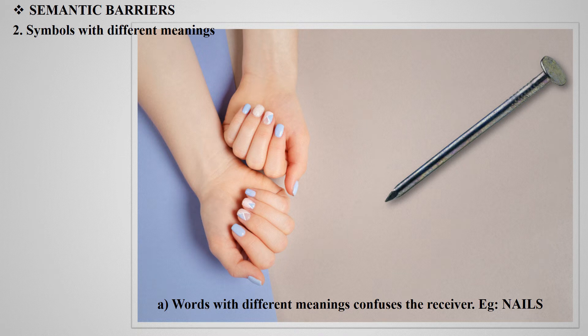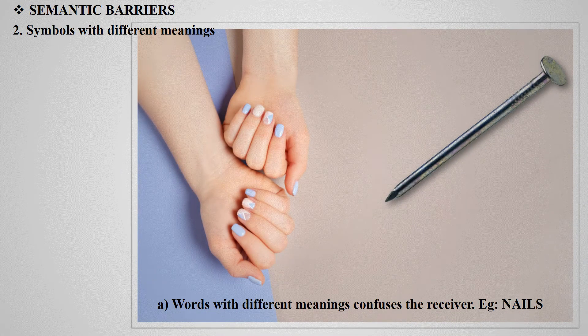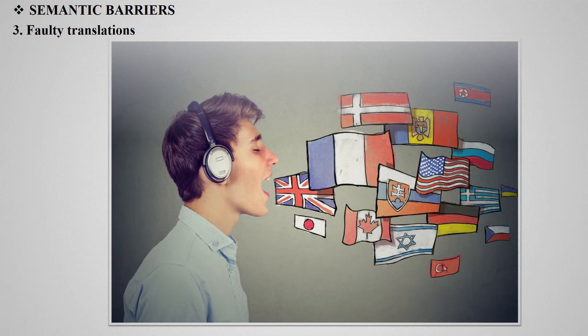The next barrier is symbols with different meanings. A word may have more than one meaning; the receiver should recognize such meanings. For example, the word 'value' — 'What is the value of this ring?' means cost. 'I value our friendship' refers to something invisible or immeasurable. 'What is the value of learning computer skills?' carries yet another meaning. Wrong recognition of word meaning leads to poor communication.